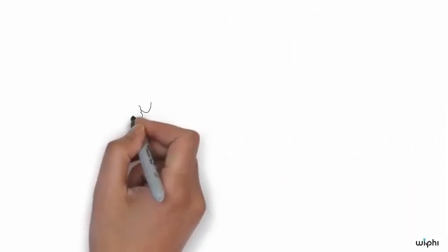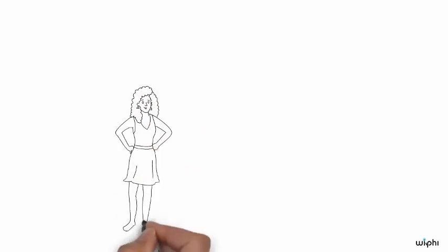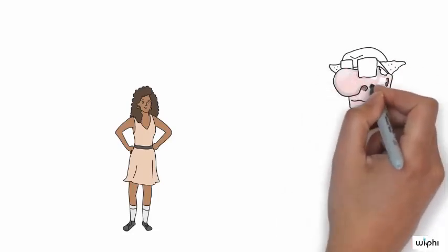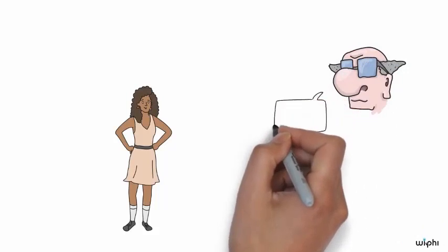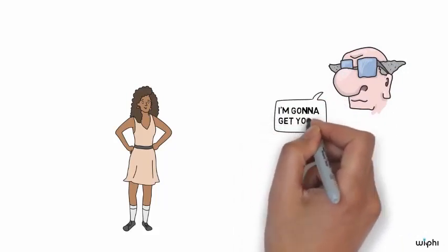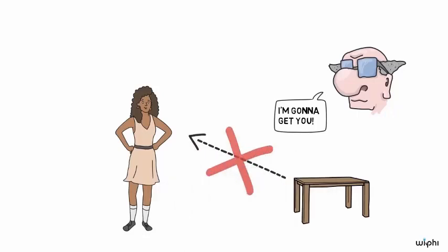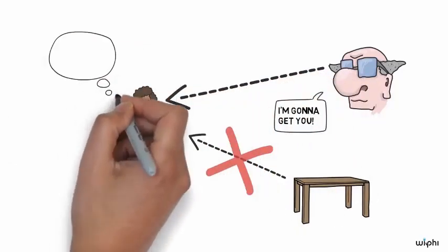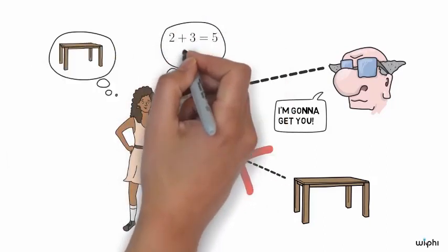Descartes also developed a powerful skeptical scenario designed to make you doubt absolutely everything including your grasp of abstract facts. Imagine that there is an evil genius of utmost power and cunning devoted to deceiving you. The evil genius controls all your sensory impressions and all your instincts about math and geometry and so on, making false things seem true to you.